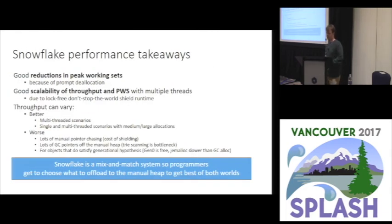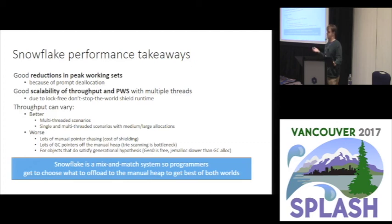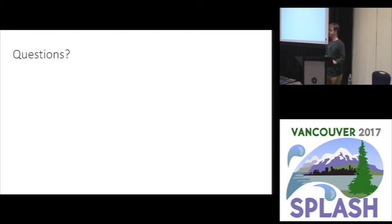Generally, you see a good reduction in peak working set, mainly because of prompt deallocation — each thread can deallocate independently without stopping the world, getting objects back much more quickly than waiting for a GC. There's generally a mix of throughput improvements to degradations: doing the shield runtime manipulation and putting things in thread-local state can be expensive, especially for pointer-chasing programs. You have to play the trade-off game, but it is pay-as-you-go — pick the bits you want, change them, and you can get wins in those places.